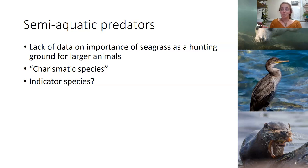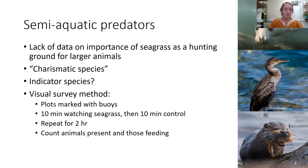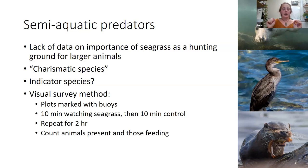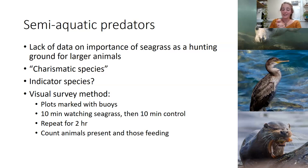If we can show that seagrass is important as a feeding ground for birds, seals, and otters, that increases the argument for protecting seagrass and may benefit these species themselves. It would also be great to work out if one of these species could be an indicator of a healthy seagrass meadow — if you see them feeding over it, it might indicate a good fish population. My method was simple: I marked out my seagrass and control plots with buoys — using armbands, which was Marie's idea — then watched each plot alternately for 10 minutes over two hours.